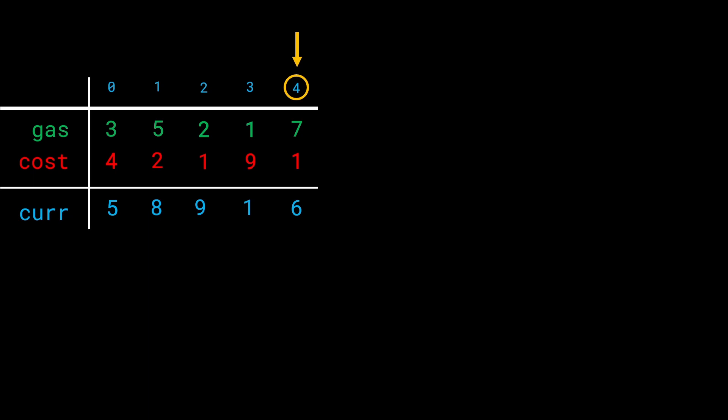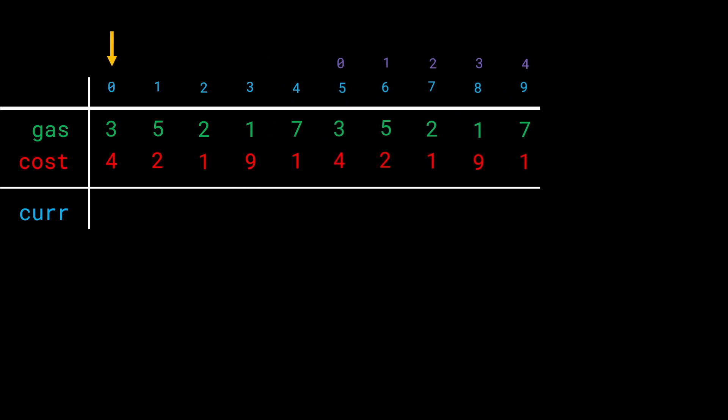Before jumping into the optimization — which is super simple — here's a trick that helps a lot in problems with a circular route: simply take the array and copy-paste it. The first half is the initial array and the second half is a copy. The original indices are noted on top, so index 5 is actually index 0.